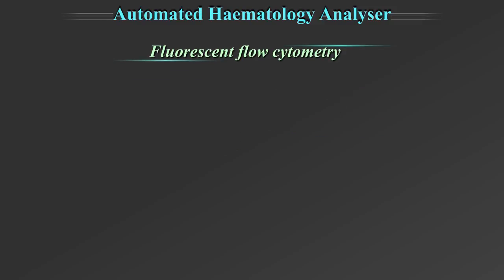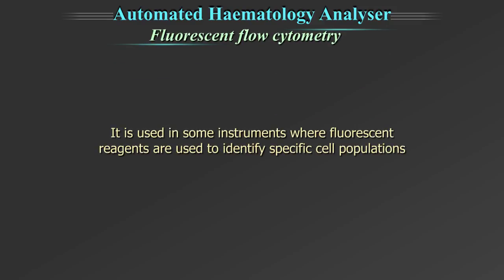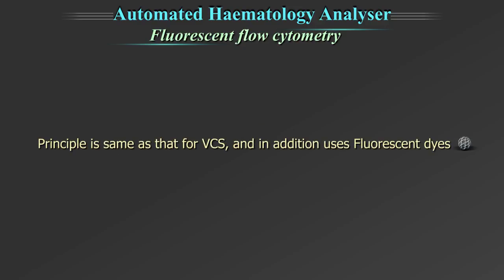Fluorescent flow cytometry is used in some instruments where fluorescent reagents are used to identify specific cell populations. The principle is the same as that for volume conductivity scatter, and in addition, it uses fluorescent dyes to reveal the nucleus-to-plasma ratio of each stained cell. The added advantage is the analysis of platelets, nucleated RBCs, and reticulocytes.